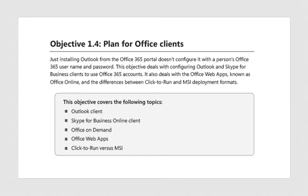Just installing Outlook from the Office 365 portal doesn't configure it with the person's Office 365 username and password. This objective deals with configuring Outlook and Skype for Business clients to use Office 365 accounts. It also covers Office Web Apps known as Office Online and the differences between Click to Run and MSI deployment formats. Topics include: Outlook Client, Skype for Business Online Client, Office On Demand, Office Web Apps, and Click to Run versus MSI.